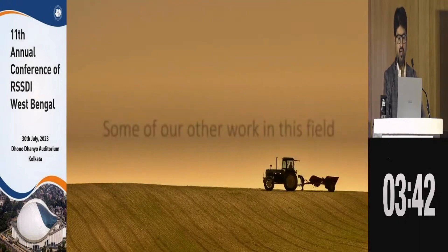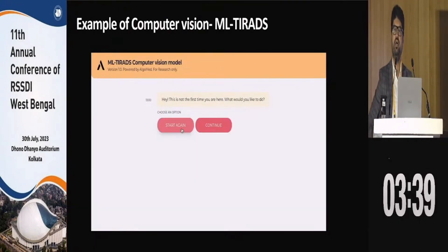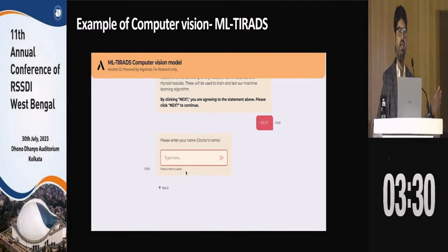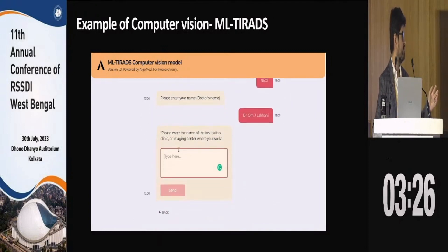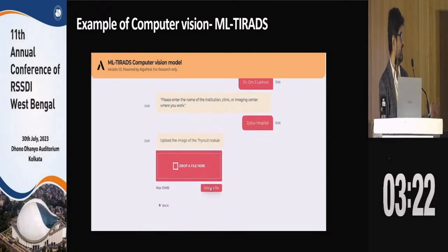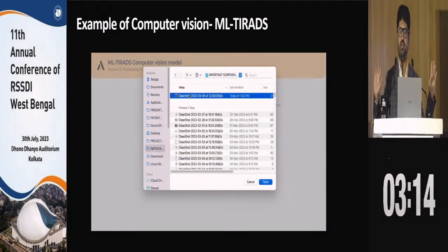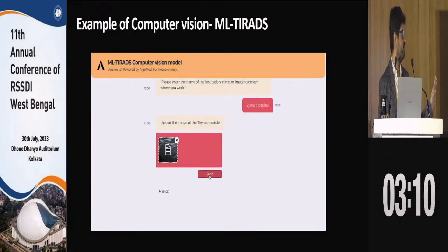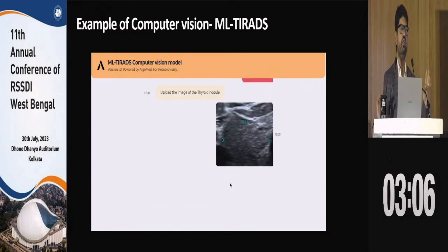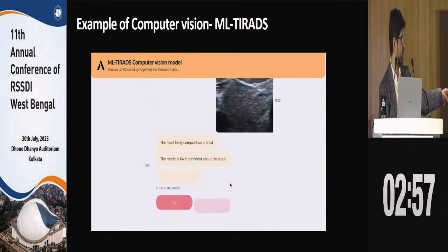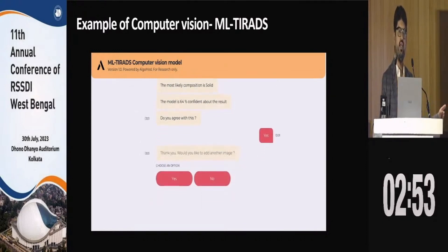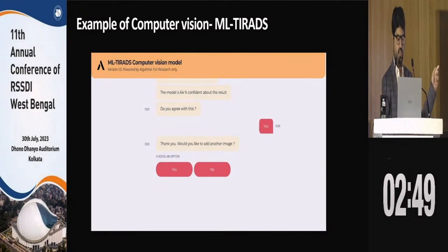We are also working on a computer vision model for TIRADS called ML-TIRADS. You put in the patient's thyroid ultrasound image — this is still very nascent, like a first-year resident. You upload the image and it will tell you the first step of TIRADS calculation: the composition of the thyroid nodule, whether it is solid. It says 'likely solid composition' with 64% confidence. We did a clinical study on this, presented as an abstract at ITSCON, and are publishing it very soon.